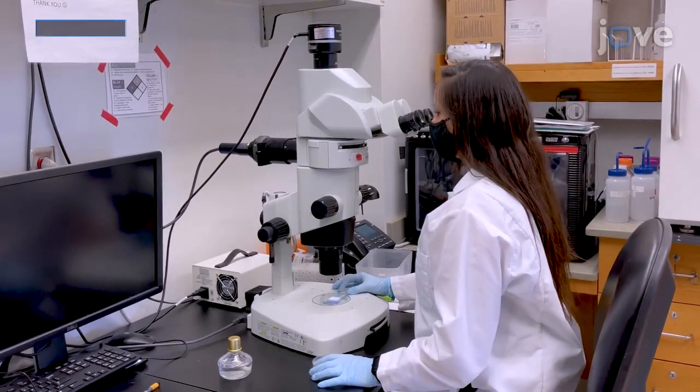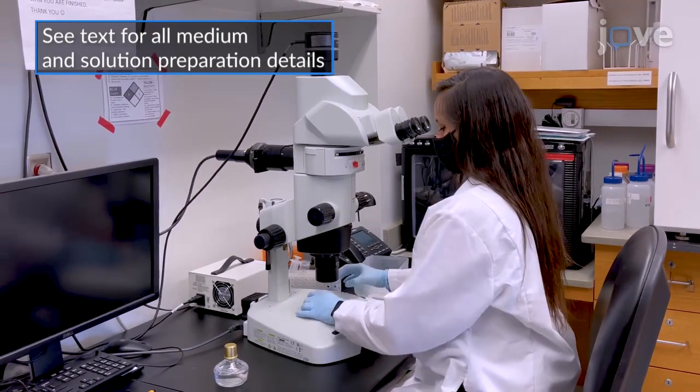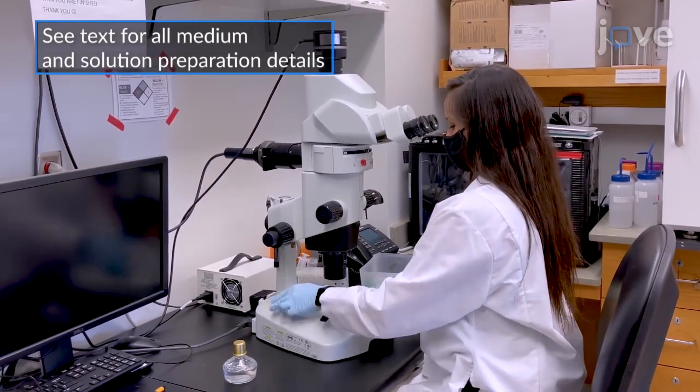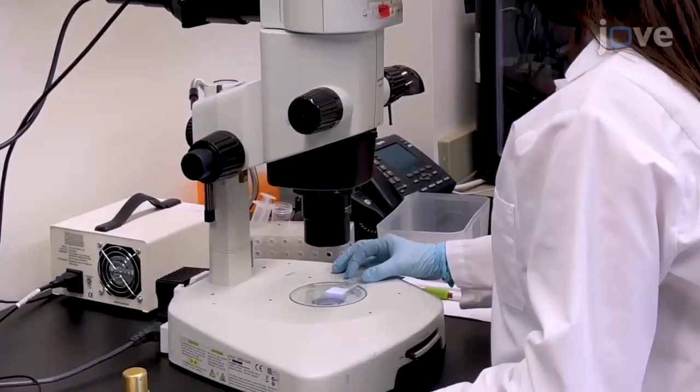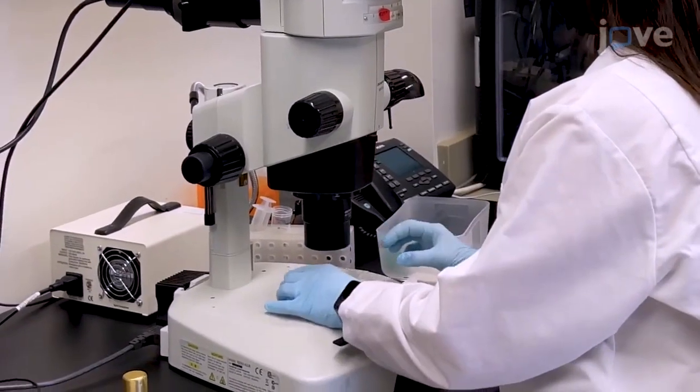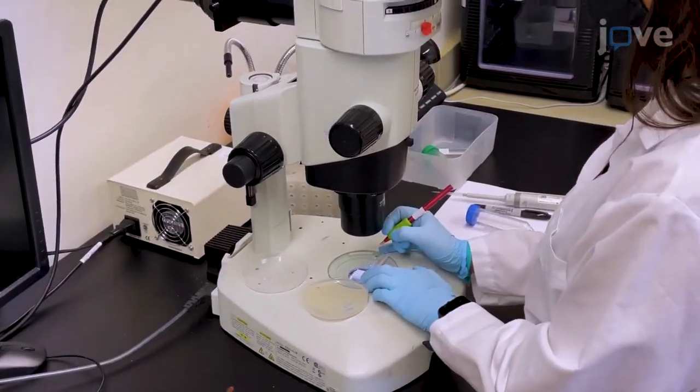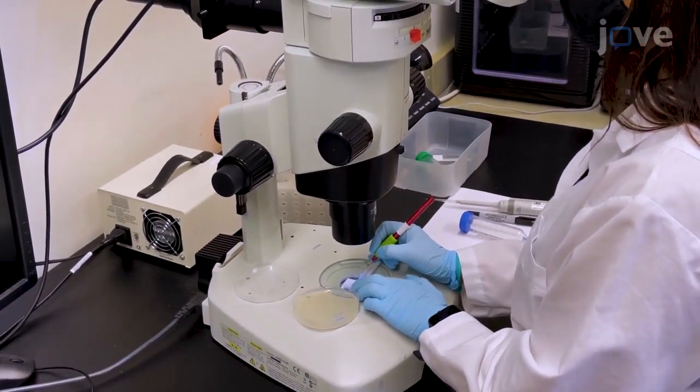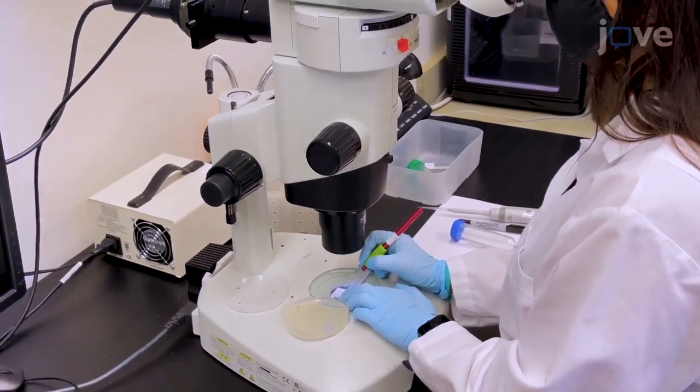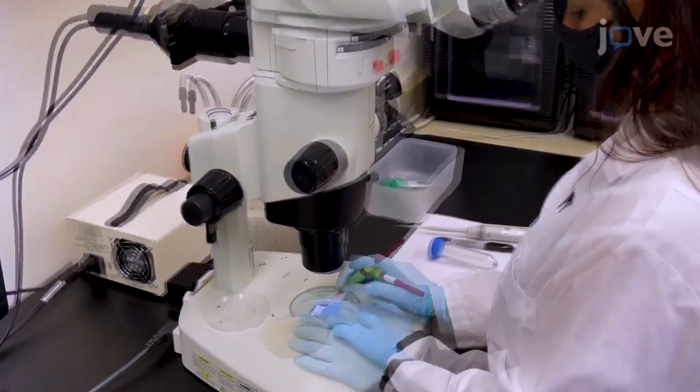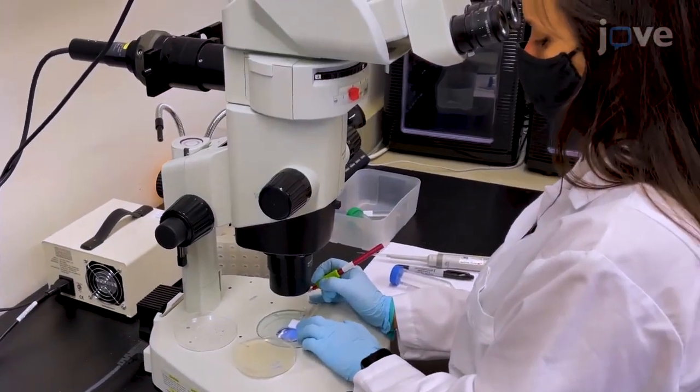To analyze C. elegans locomotor activity in liquid medium on glass slides, after synchronizing control and mutant worm strains on NGM plates with and without drug treatments of interest to the L4 stage, use a worm pick and a stereo microscope to pick five worms per strain and condition into individual 20 microliter drops of S-basal solution on a glass slide.